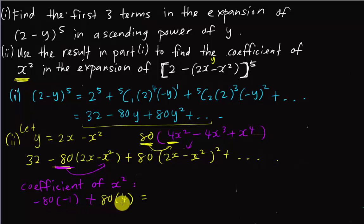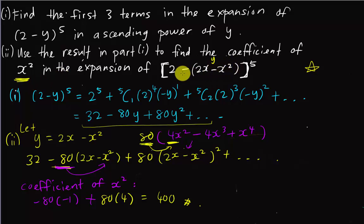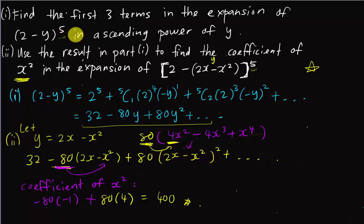So the total coefficient of x² is 80 + 320 = 400. This question is about 3 to 4 marks. The key point in part 2 is recognizing the pattern — (2 - y)^5 and (2 - (2x - x²))^5 have exactly the same structure and power, which allows you to use the part 1 expansion by substitution. I hope you understand my explanation. Thanks for watching.